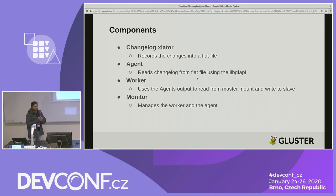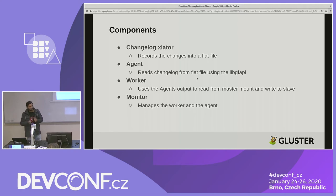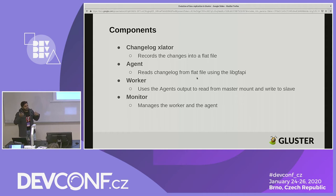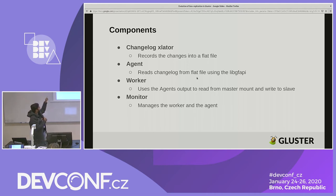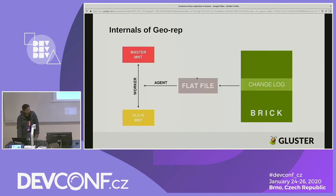The various components involved in geo-replication: on the brick side there is a translator — a basic unit in Gluster that performs a certain operation. The changelog translator receives every operation performed on that volume and records it into a flat file. The agent reads this flat file and understands what's written — what files have been changed or created. The agent uses the libgfapi to interpret the binary flat file. From that, the agent gives output to the worker, which actually copies data from master to slave. The worker and agent processes are monitored by the monitor, which restarts them if they go down.